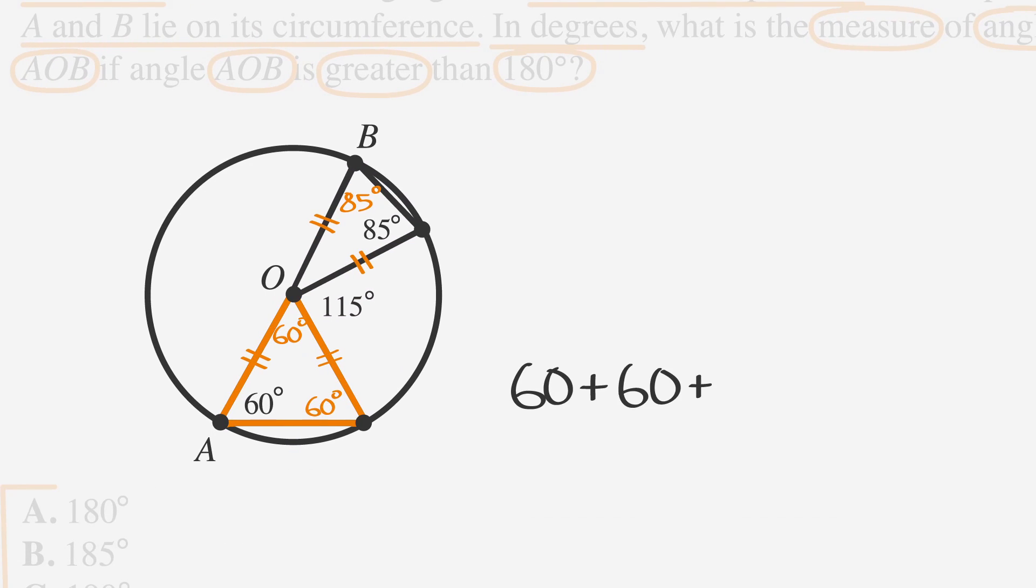The triangle containing point A must be an equilateral triangle with all angles measuring 60 degrees in order to add up to 180 degrees. Now let's find the missing angle in the triangle containing point B. We'll call that missing angle X. We know that 85 + 85 + X = 180.